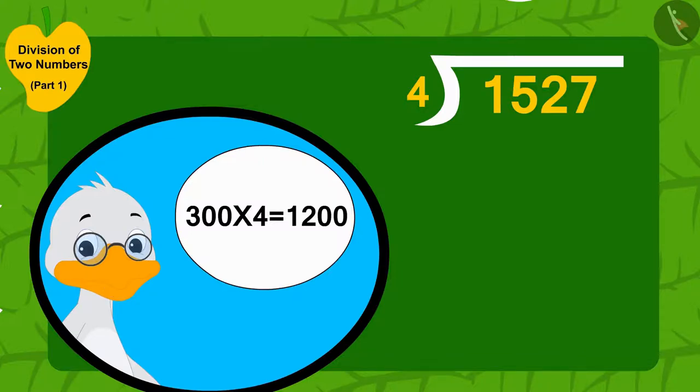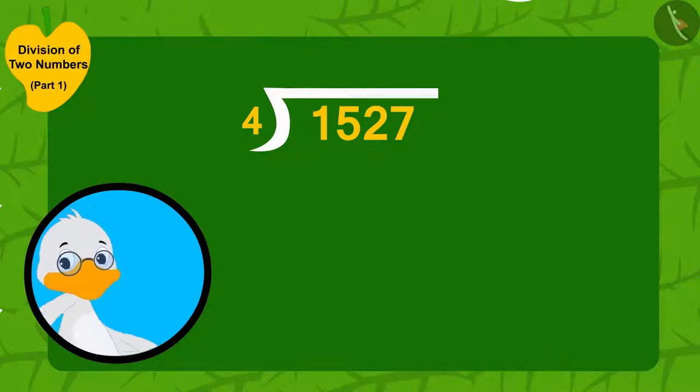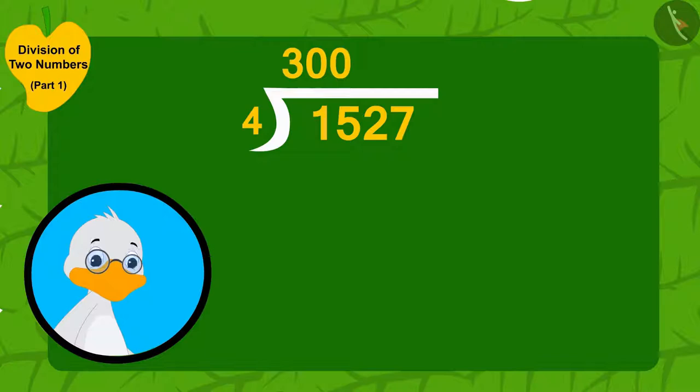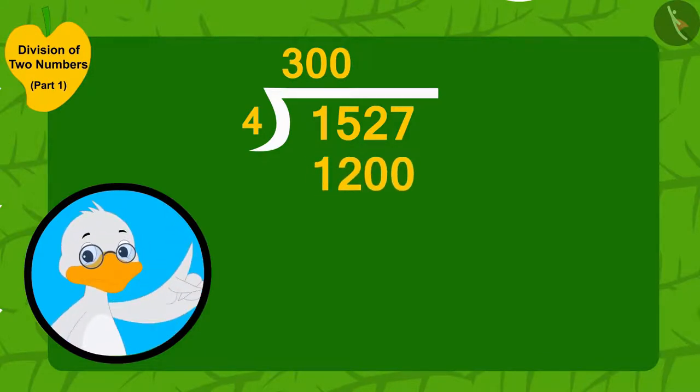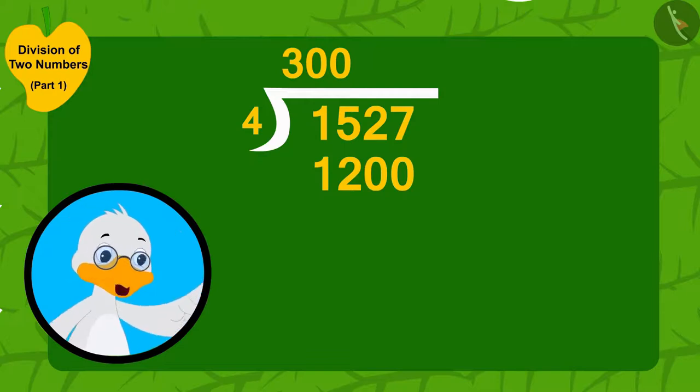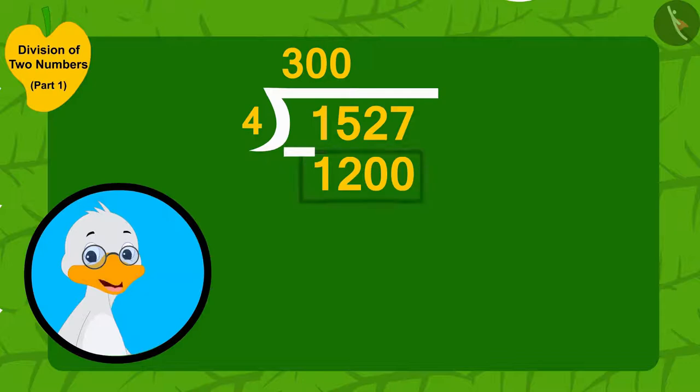Uncle thought. Now, Uncle wrote 300 here and here he wrote 1,200. To find the number of mangoes that are left, I would subtract 1,200 from 1,527.